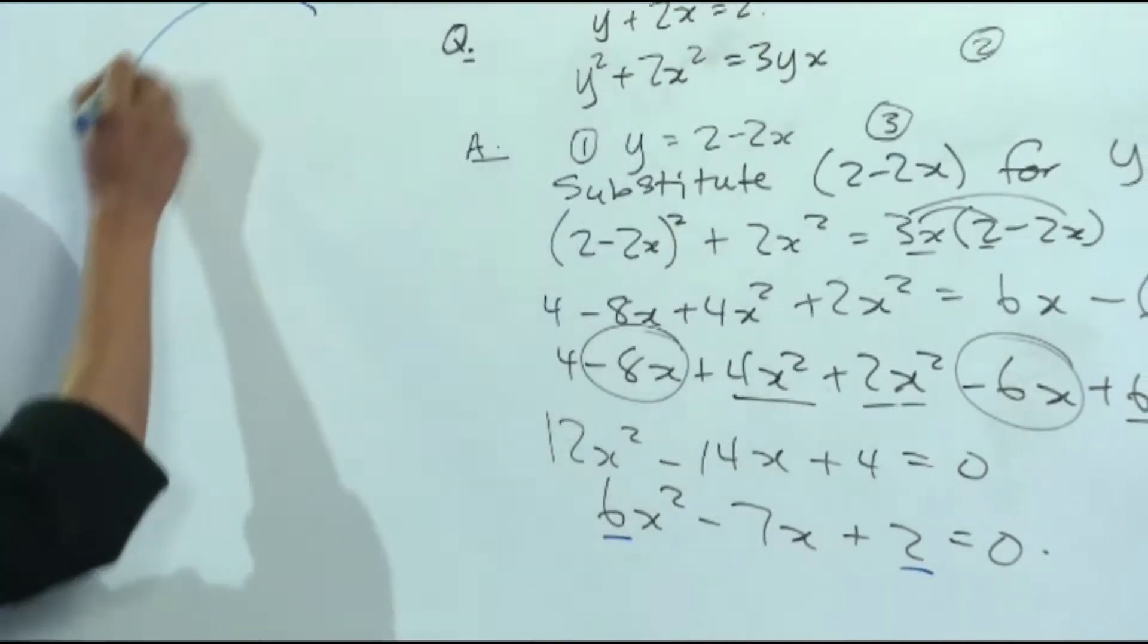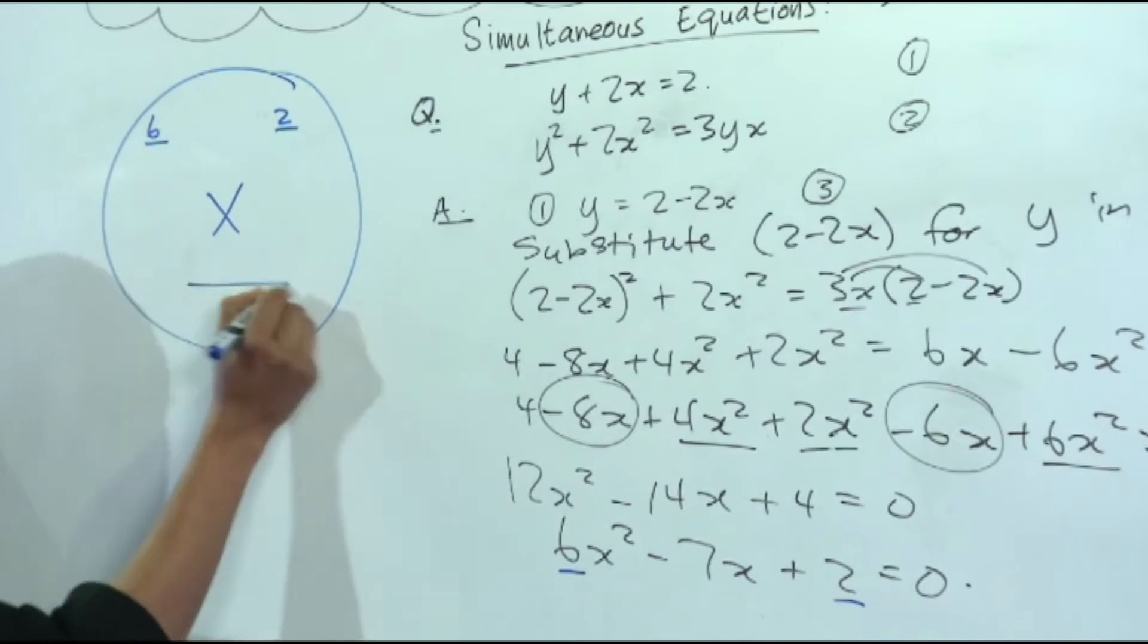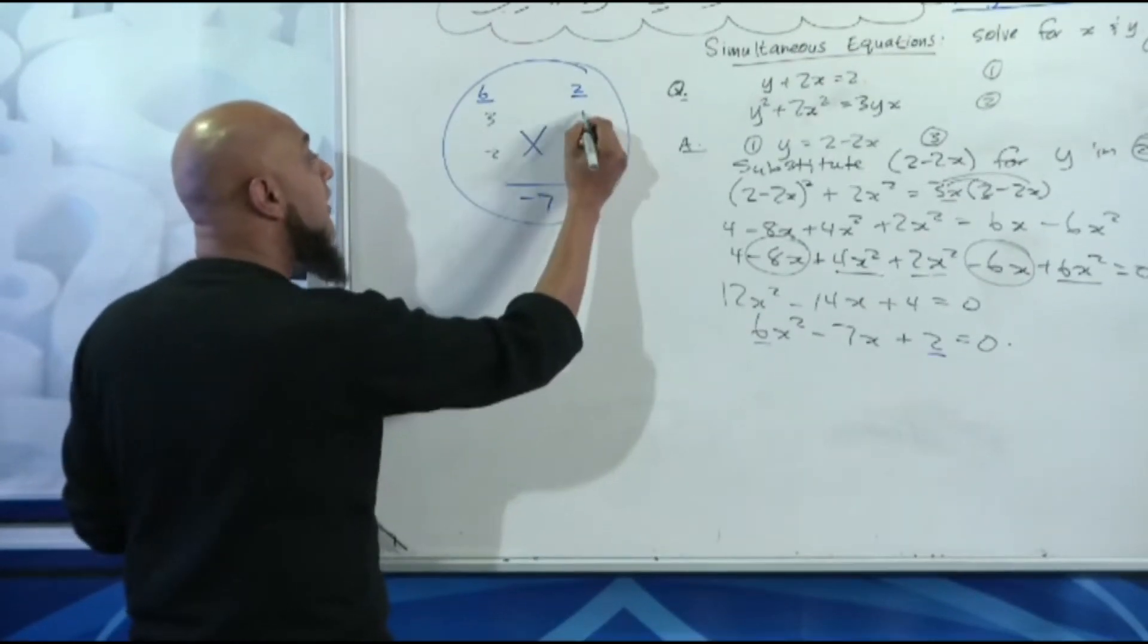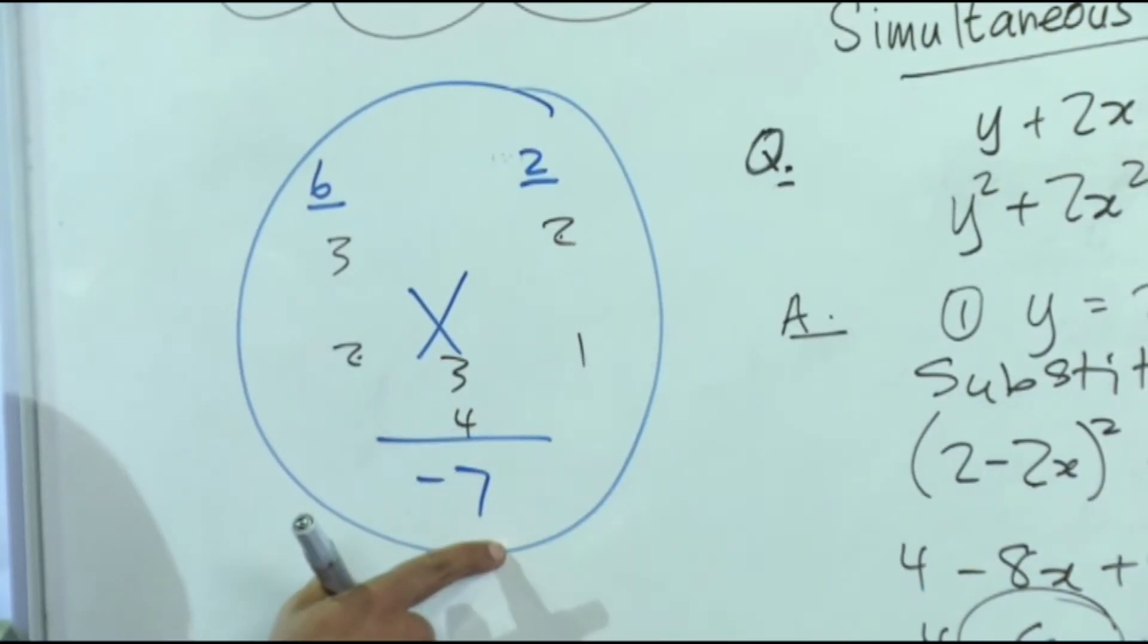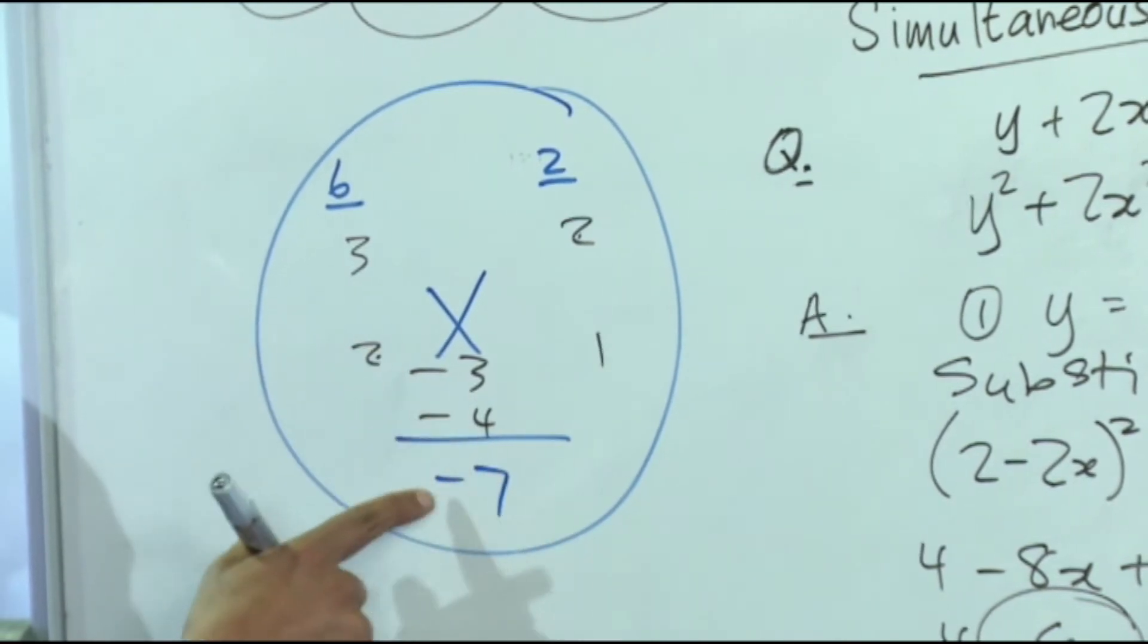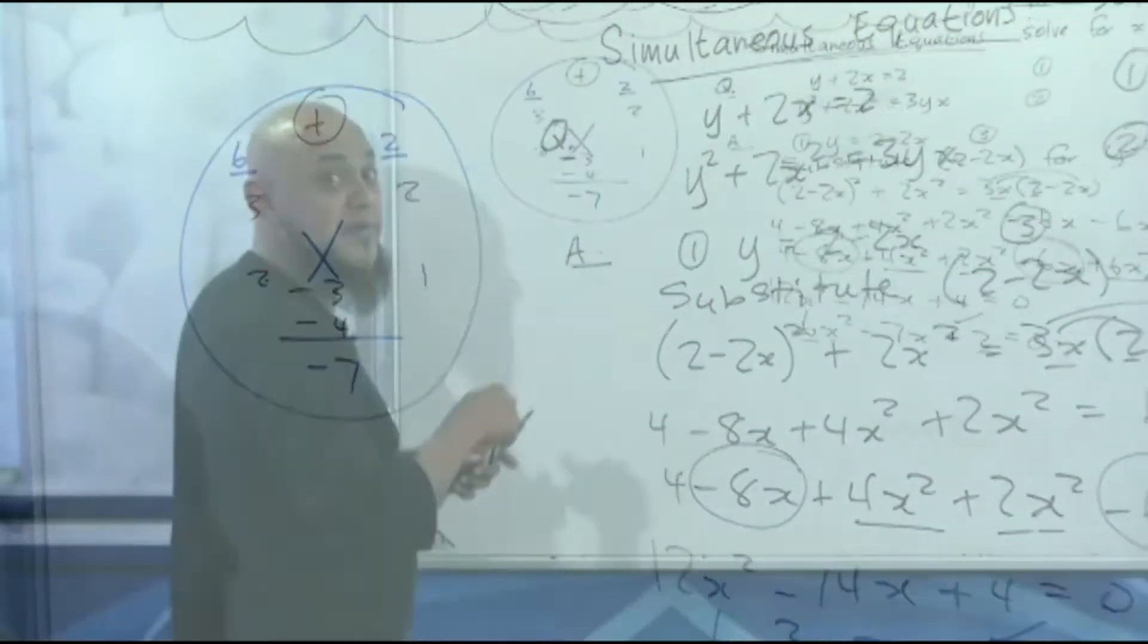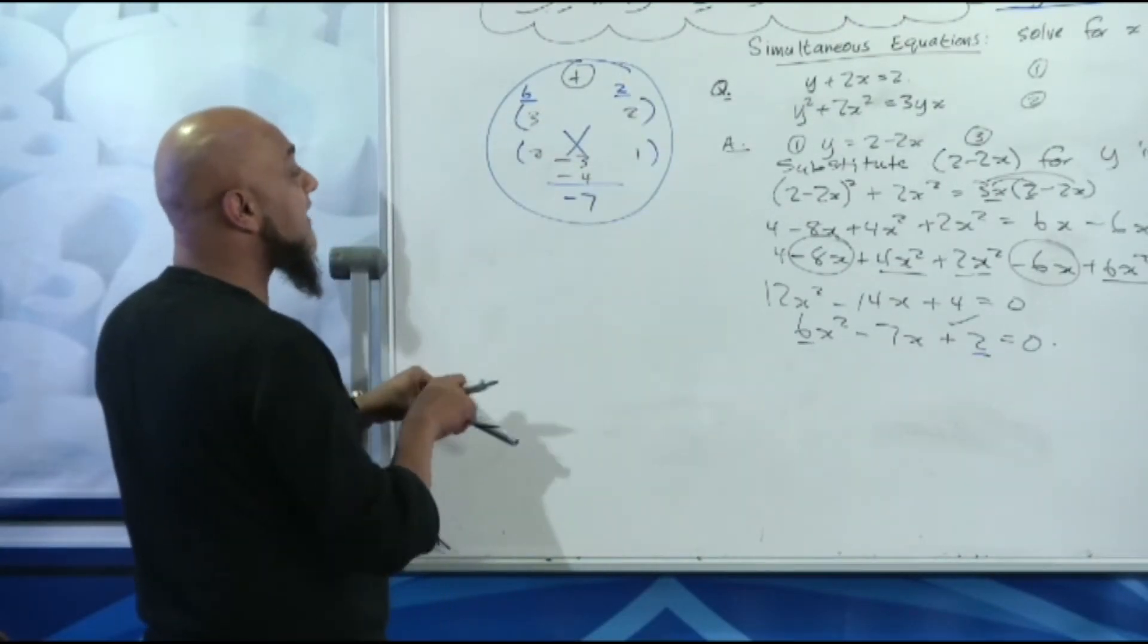So we are now going to use the factors of 6, the factors of 2 that when cross multiplied will give me negative 7. What are your factors of 6? 3 and 2. Your factors of 2? 2 and 1. 3 times 1 is 3. 2 times 2 is 4. Can a 3 and a 4 give you a negative 7? Yes, it can. Negative 3, negative 4 when added will give me minus 7. Negative times negative is a positive. What's my last sign? Positive. Do I think I'm right? No. I know I'm right.